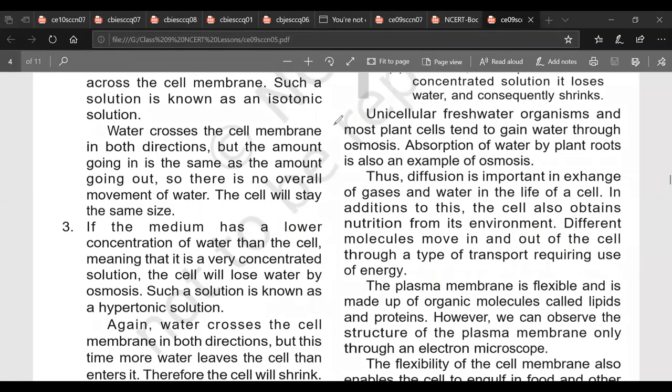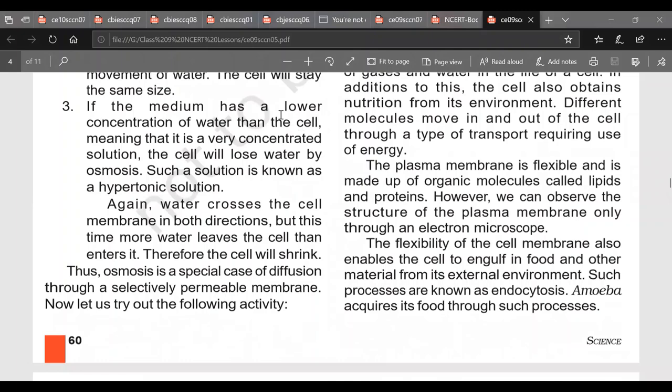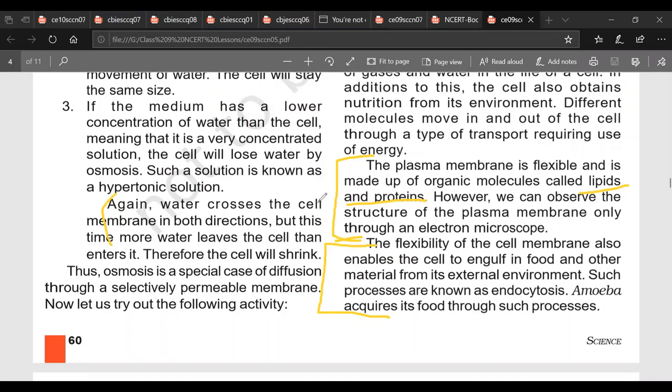Now we come to next part: flexibility of cell membrane. This is important for your exam. Flexibility of cell membrane. The plasma membrane is flexible and is made up of organic molecules called lipids and proteins. So one more question: what is plasma membrane made up of? Now flexibility of cell membrane also enables cells to engulf in food and other substances from its external environment. Such a process is known as phagocytosis or endocytosis.